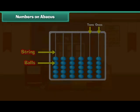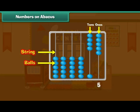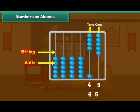Look at this abacus. It has five balls in the ones place and four balls in the tens place. Therefore, the number is 45.